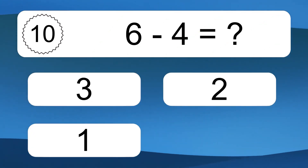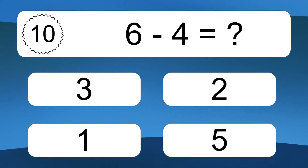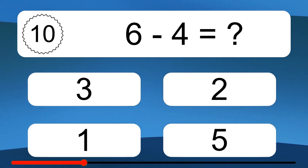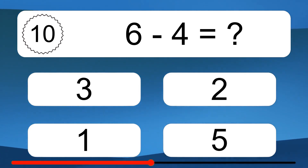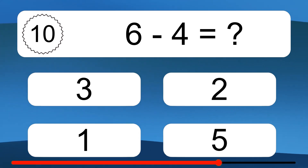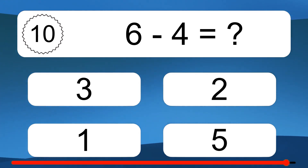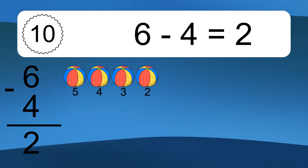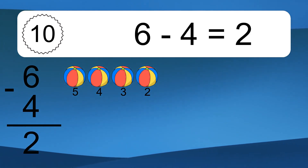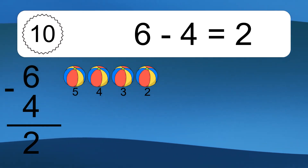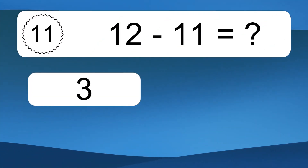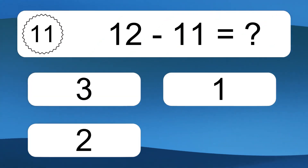8 minus 4 equals what? 8 minus 4 equals 2. Let's count it. 5, 4, 3, 2.